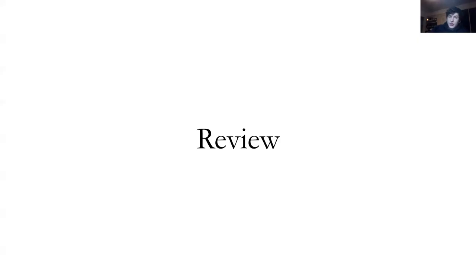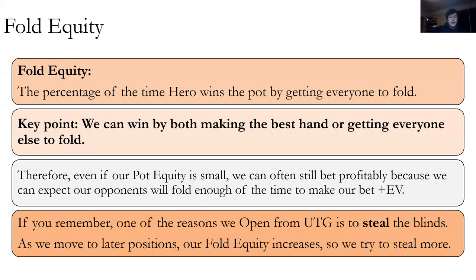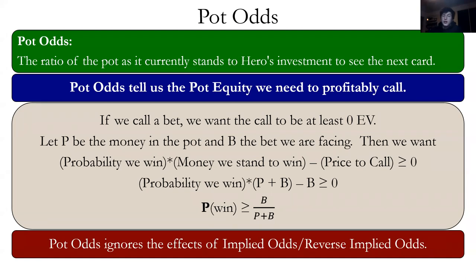Quick review: fold equity — the core idea is we can win not just by having the best hand, but by getting everybody to fold. Pot odds tells us what percentage of the time we need to win to profitably call. When doing the formula, we add their bet to the pot. So if the pot is 10 and they bet five, the pot's now 15, so our formula would be five over fifteen plus five.